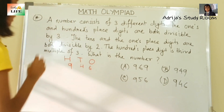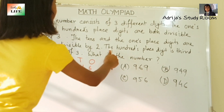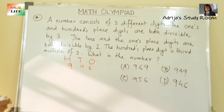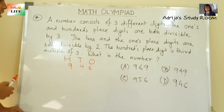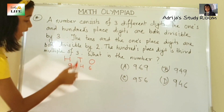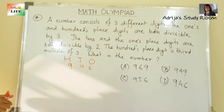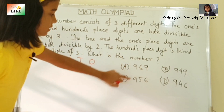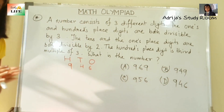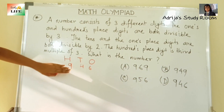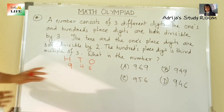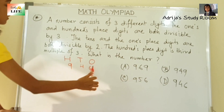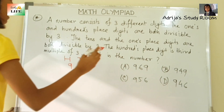So that will be the answer. It also says the hundreds place digit is the third multiple of 3. The hundreds place here is 9, which is the third multiple of 3. So this is the correct answer — the number is 946.